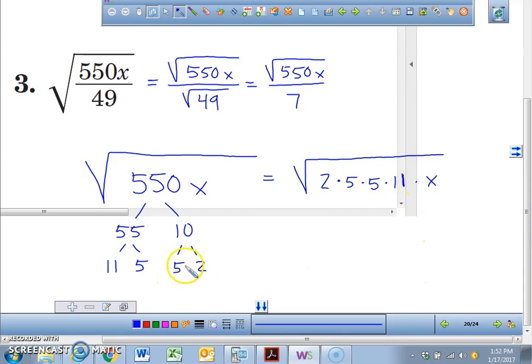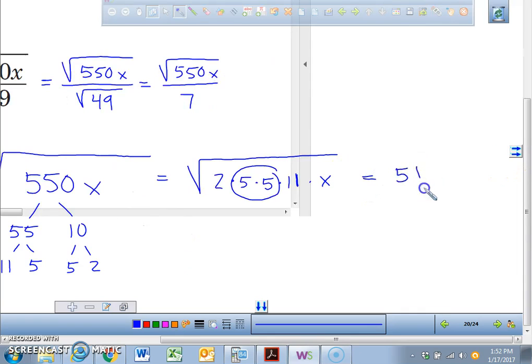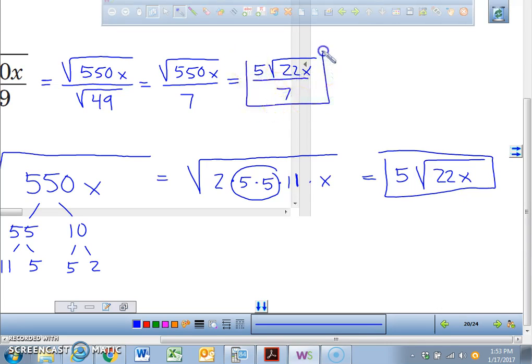I meant to list 2, 5, 5, and 11. Now radicals look for pairs. We have a pair. So what can be pulled out of this? A 5 can come out. What's still left on the inside? A 2, an 11, and an x. So we're going to put 22x. This is what the numerator simplifies to. So we're at 5⋅√(22x) over 7. Now I can't break this down anymore. I can simplify this simply because there was a pair of 5s. The square root of 25 becomes a positive 5. This is your final answer, totally simplified.